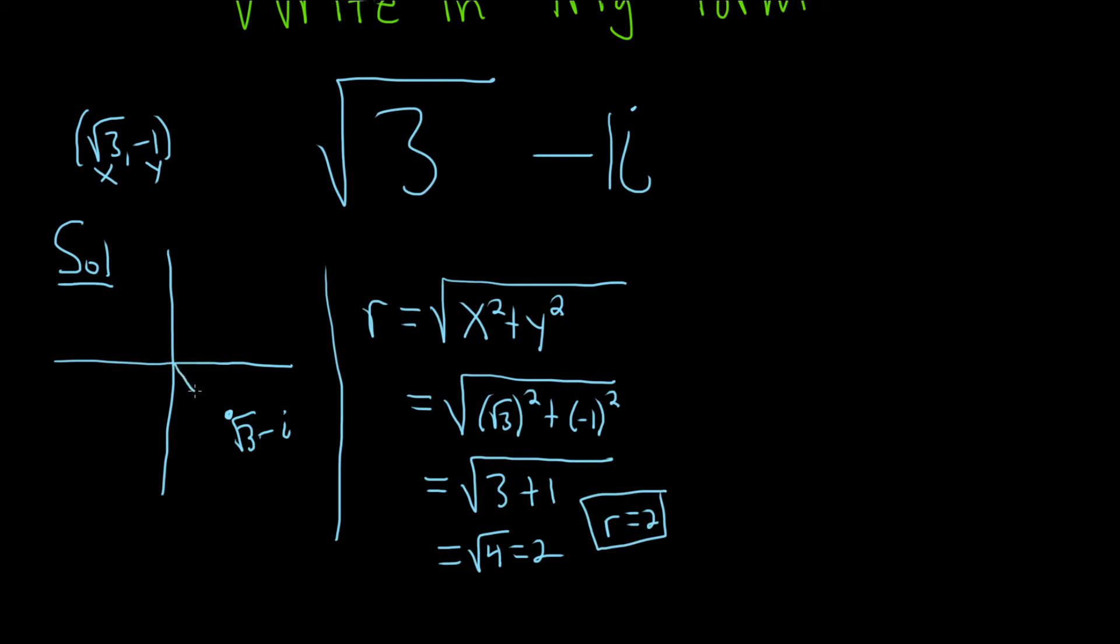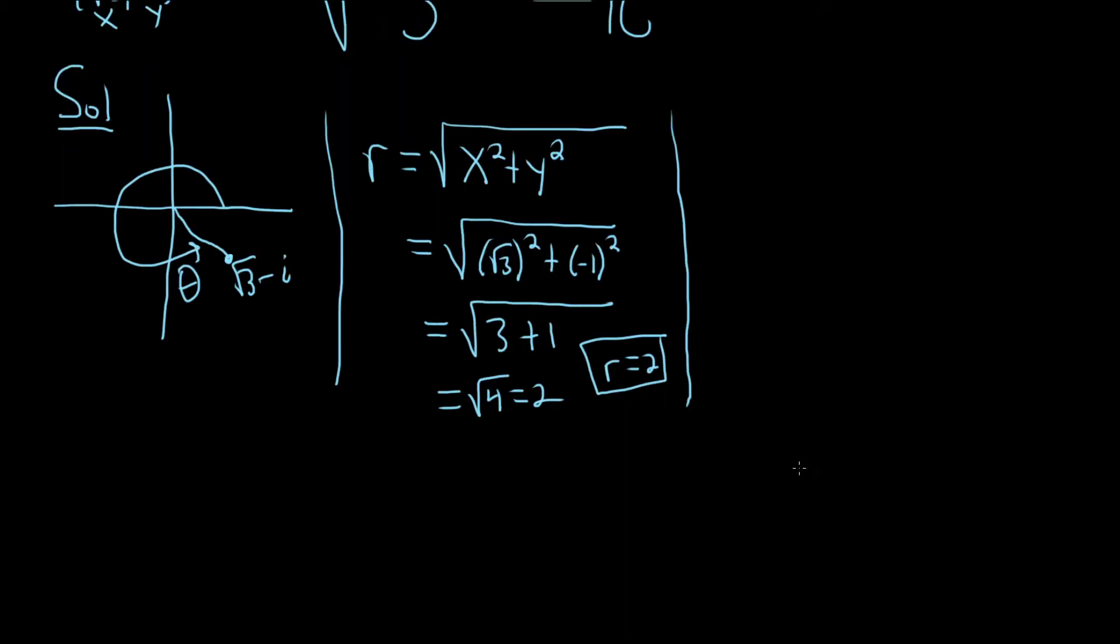We have our little picture, which I'll draw like this because we are going to need to find this angle at some point. Now, let's just think about what we really want. We want this to be in trig form. So that means that the square root of 3 minus i needs to be equal to r times cosine theta plus i sine theta.